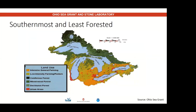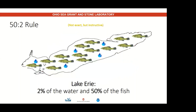Lake Erie is also the southernmost and the least forested of the Great Lakes. All of these factors — being the shallowest, the smallest, and the least forested — play into our Lake Erie ecosystem. While Lake Erie has only about 2% of the water of all the Great Lakes, we have about 50% of the biomass, or the living organisms, inhabiting the entire Great Lakes ecosystem. This means that there are more fish in Lake Erie than all the other Great Lakes combined.